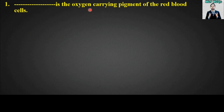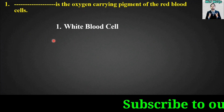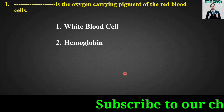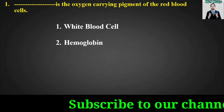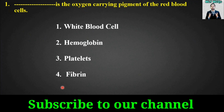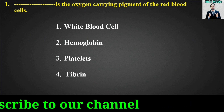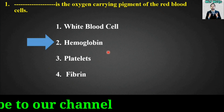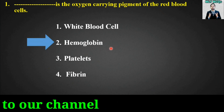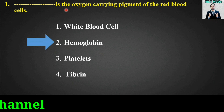MCQ number one: Blank is the oxygen carrying pigment of the red blood cells. Options are: white blood cells, hemoglobin, platelets, or fibrin. The right answer is option number two — hemoglobin is the oxygen carrying pigment of the red blood cells.